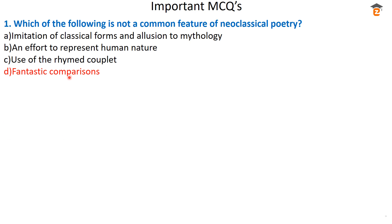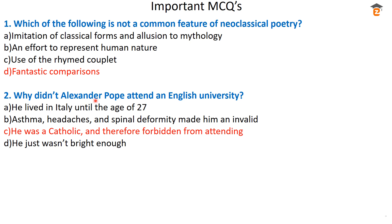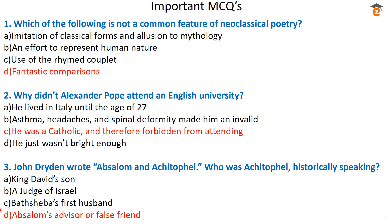Question number two: why did Alexander Pope not attend an English university? The correct answer is option C — he was a Catholic and therefore forbidden from attending the English university. At that time, an act was passed against Catholics; they were banned from attending education at the university level. That is why Alexander Pope was forbidden from attending university-level education.